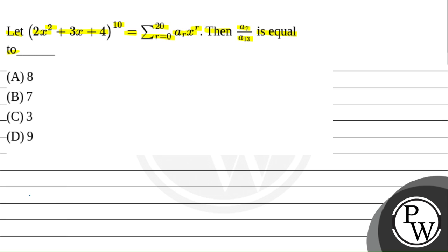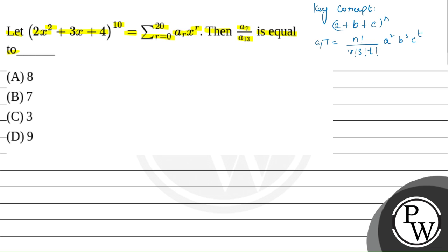For finding the answer, let us write the key concept. The key concept is: if there is a binomial expansion of (a + b + c) to the power of n, then the general term is given by n! divided by r! s! t! times a^r b^s c^t, where r + s + t = n. Here we have 2x² as a, 3x as b, 4 as c, and 10 as n.